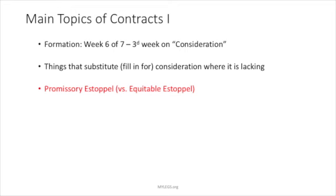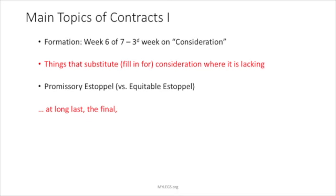Courts don't like to order people to do things, but in certain cases like this one, they will. That is the difference between promissory estoppel — where the court orders a party to actually do something, which is kind of rare — and equitable estoppel, the larger category, where the court simply stops a party from making an argument it otherwise could make, because to make that argument would be unfair. One is defensive, one is offensive.